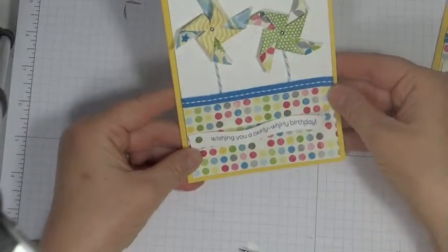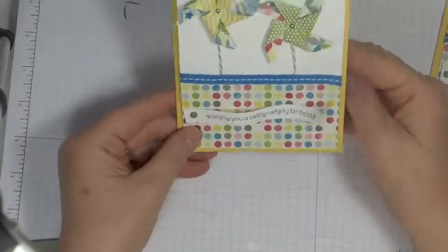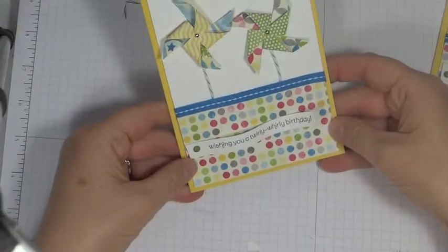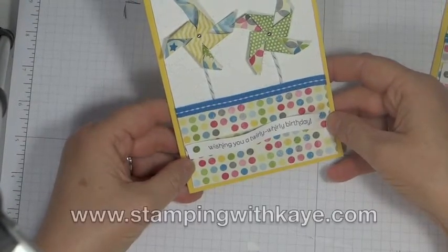And there you've got your finished card. I'll be putting a piece of Whisper White cardstock on the inside and a sentiment and you've got a pinwheel card using the new Pinwheel Sizzlet. Thanks for joining me come back and visit at stampingwithkay.com bye bye.